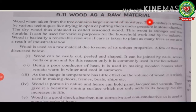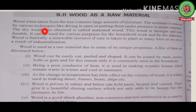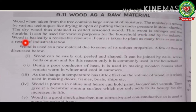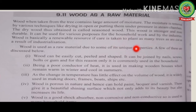Wood as a raw material: wood taken from trees contains large amounts of moisture, making it prone to microbial growth. This moisture is removed by techniques like drying in open air or in steam chambers under pressure. The dry wood obtained is called seasoned wood, which is stronger and more durable. Wood is basically a renewable resource. It can be easily cut, peeled, and shaved, making it usable for numerous purposes.